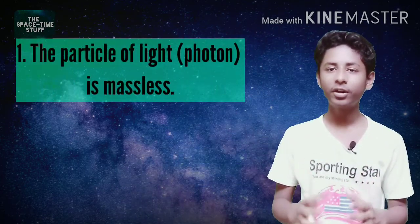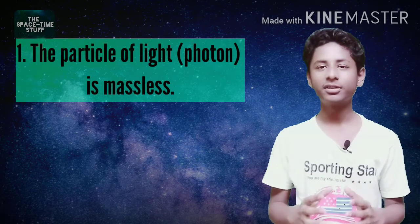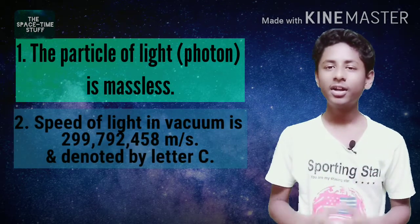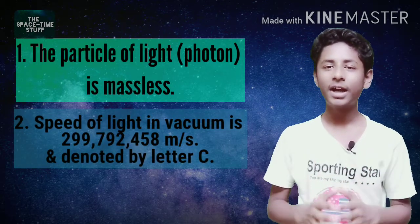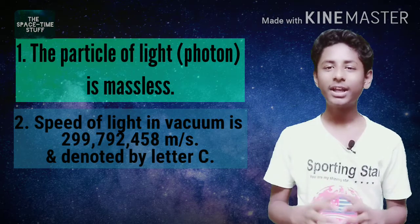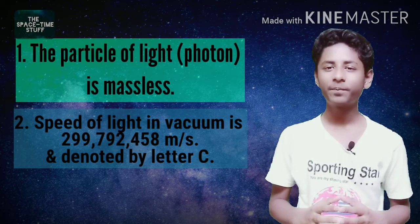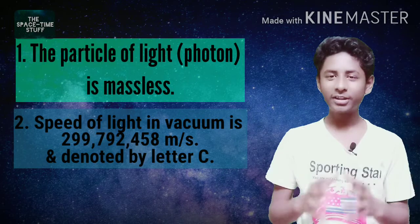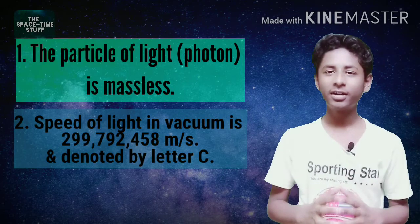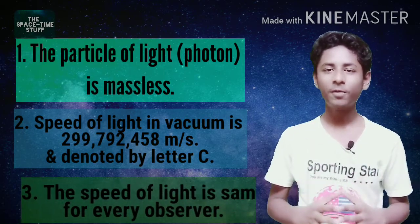Before the assumption I want to clarify some things about light. First, the particle of light, the photon, is massless. Second, the speed of light in vacuum is about 299,792,458 meters per second. Third, the speed of light is the same for every observer, despite their motion and position in space-time.